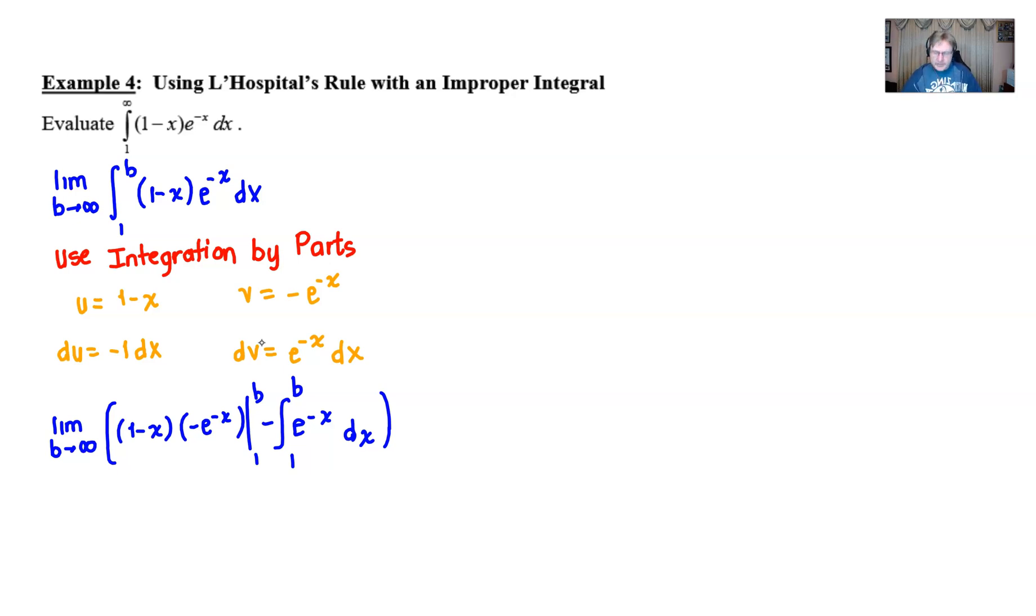So from here, what do we do? Well, I'm going to go ahead and drop down this limit statement. And then I am going to officially rewrite this statement. We have 1 minus x times negative e to the negative x. And then if we integrate e to the negative x, which we've already done once in this problem, we get this negative e to the negative x. But that minus there is going to absorb that other minus into a plus. And therefore, we have something that looks like this.